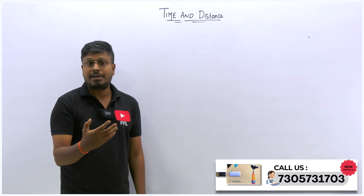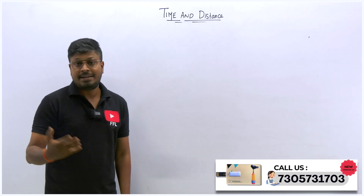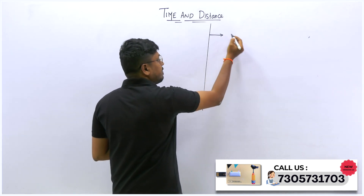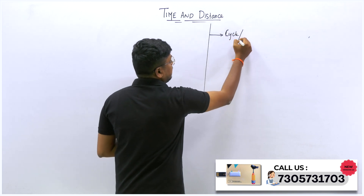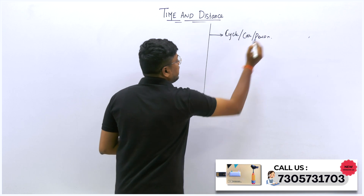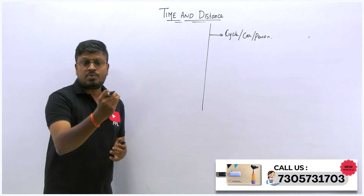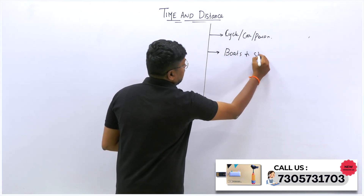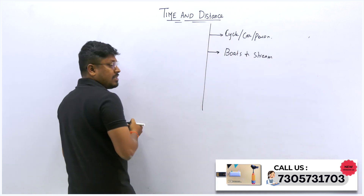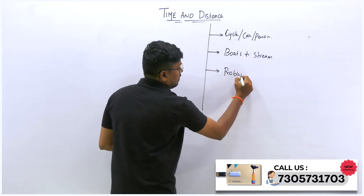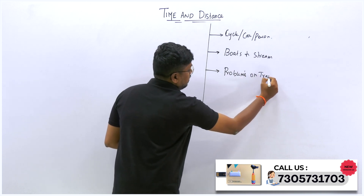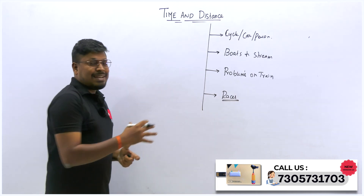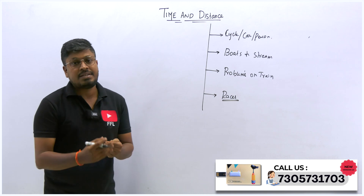Time and distance is a very huge topic. When you split it into separate categories, the questions you can see are: first, normal-based questions like cycle, car, bike, and a person running. Second category is boats and streams. Third is problems on trains. And the last is races. These are the main categories of questions from the topic time and distance.